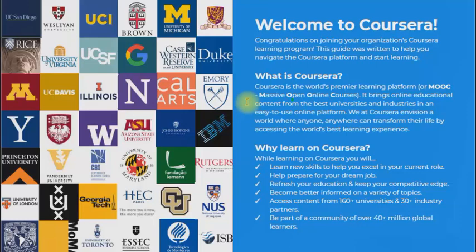In the digital certificate, your course title is displayed along with what you have completed from the university. For example, if you have done a course from the University of London, it will show the University of London logo. Below that there is a verifiable link which validates your certificate. That was the short introduction of Coursera. In the next slide, I will tell you about our agreement with Coursera.